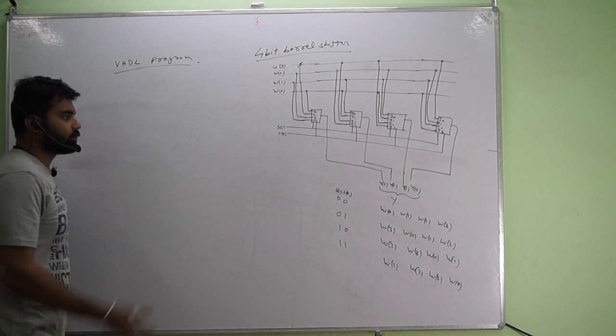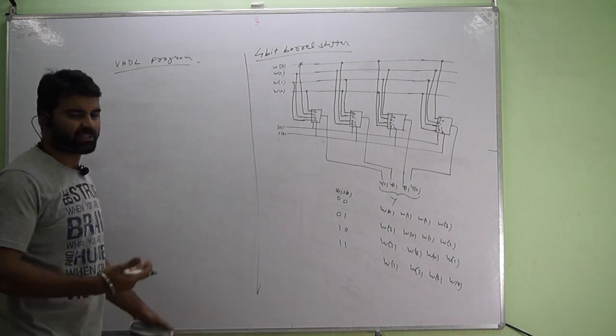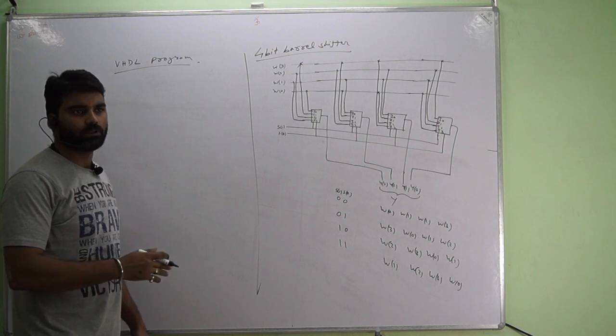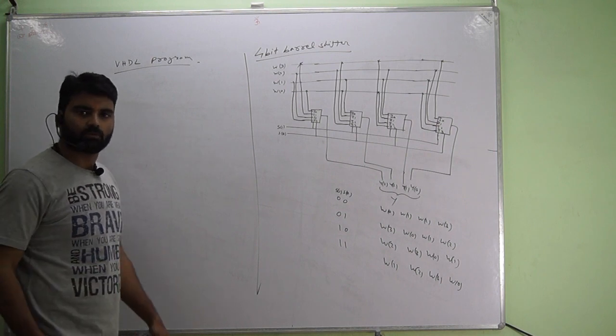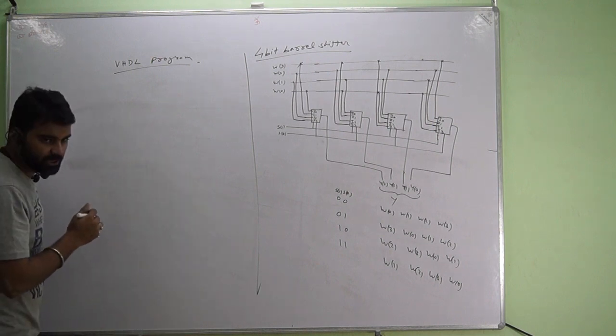We will deal with this VHDL program. This is the diagram of 4 bit barrel shifter. It has many uses. We will discuss the uses later. We will deal with the program now, step by step.